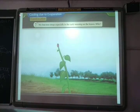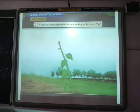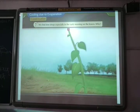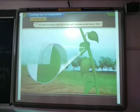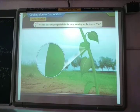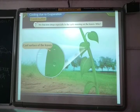We find dew drops especially on the ground and on leaves. There is water vapor in the air around us. When this water vapor comes in contact with the cool surface at night, it condenses to form dew drops.